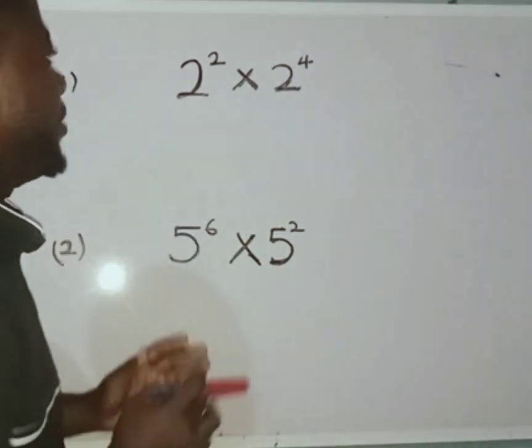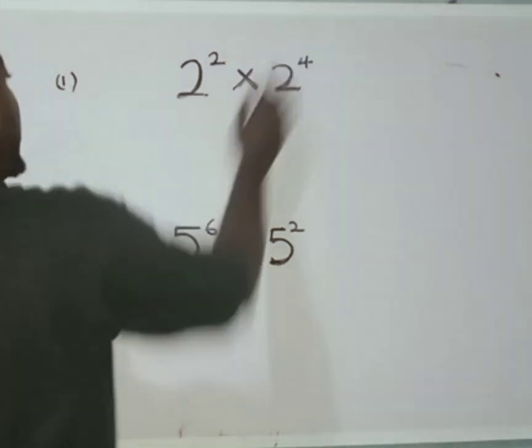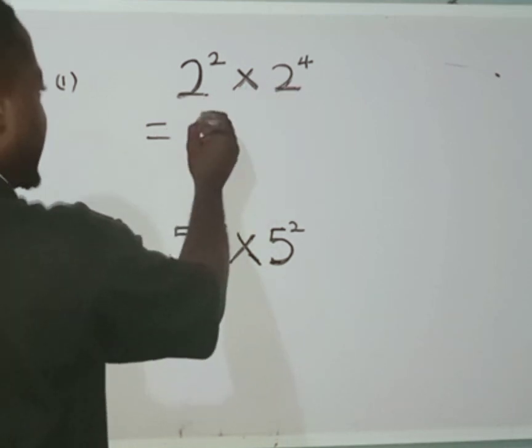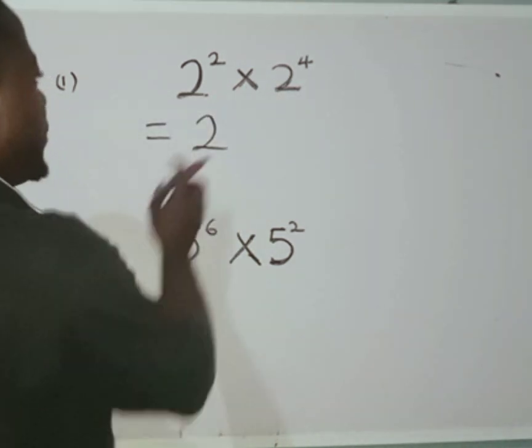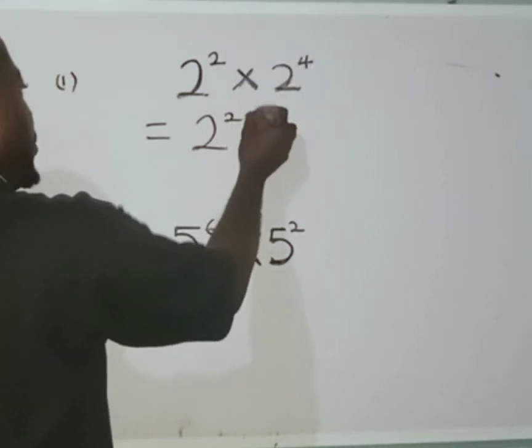So if you have to multiply numbers with the same base, what you have to do is just to add their powers. So what I'm going to do is I'm going to pick one of the base which is a two, I'll pick one two, then I will add their powers. I'm going to have two plus four.